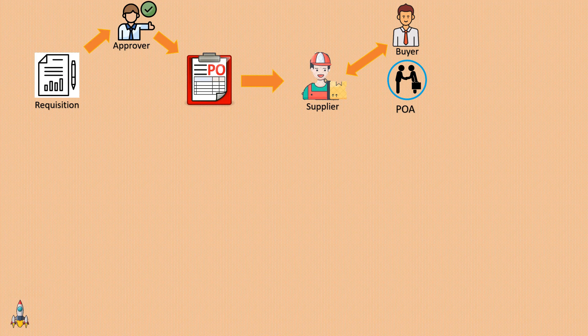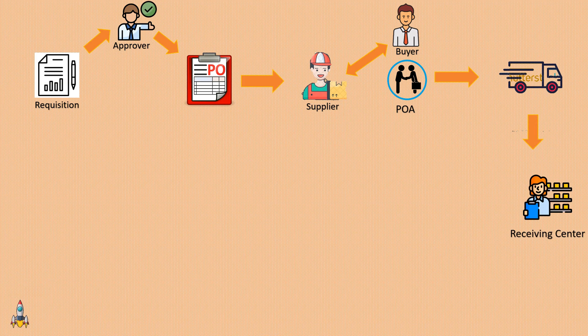Once the buyer accepts the acknowledgement, the supplier is ready to start working on the order. The supplier will collect the required goods, pack them, and send them to the buyer. The buyer would have provided a ship-to location — the place where the supplier sends the goods. At the ship-to location there is a receiving center where the goods arrive.